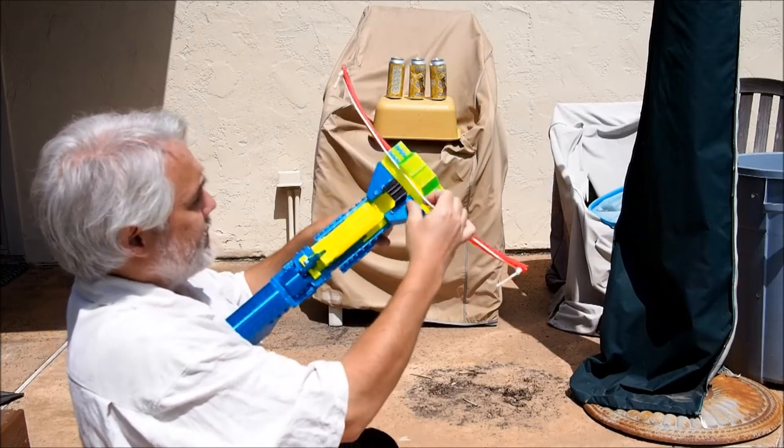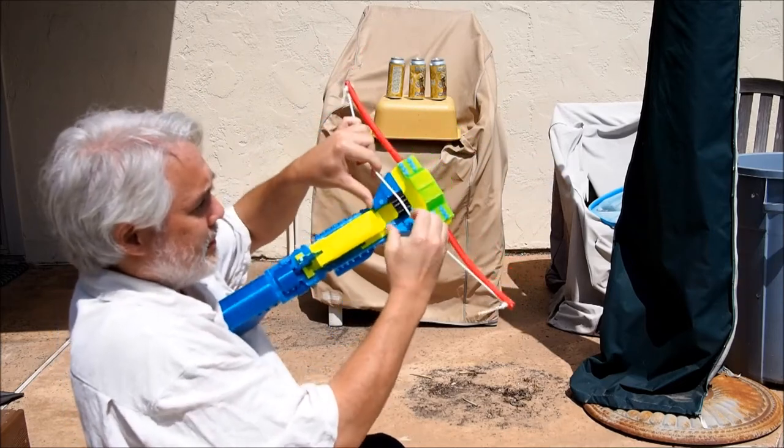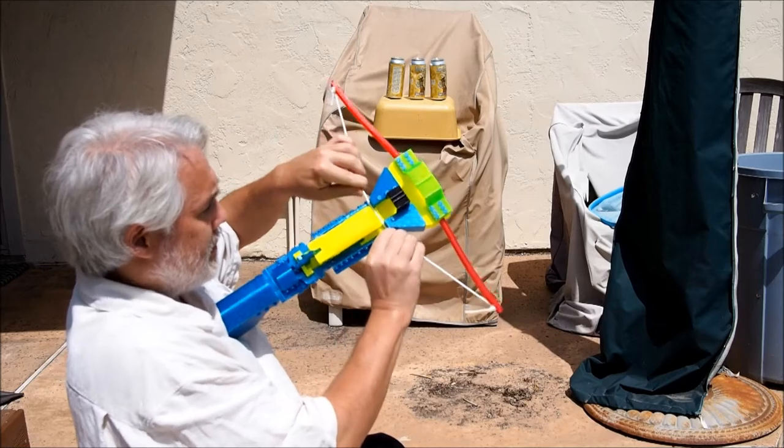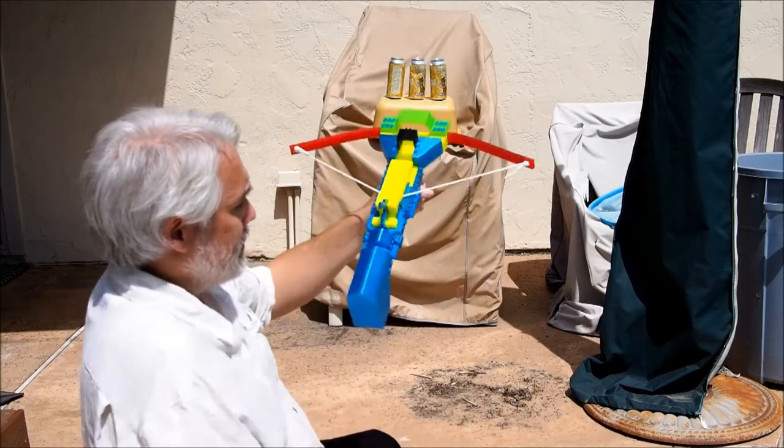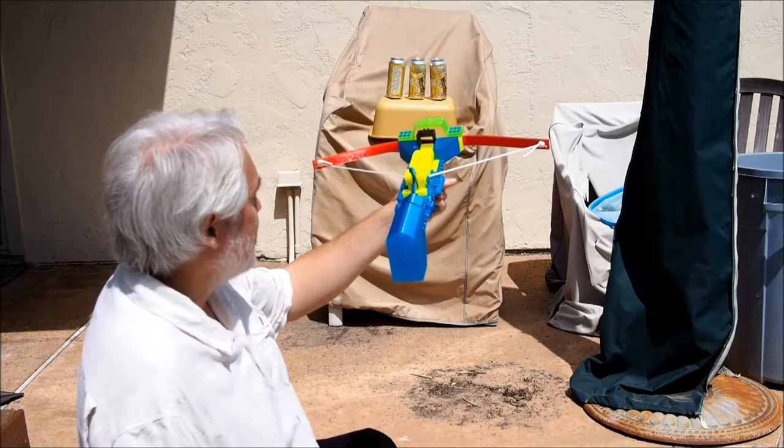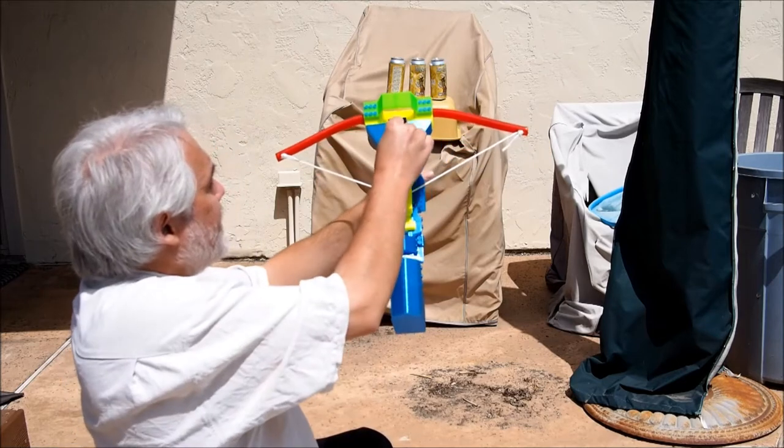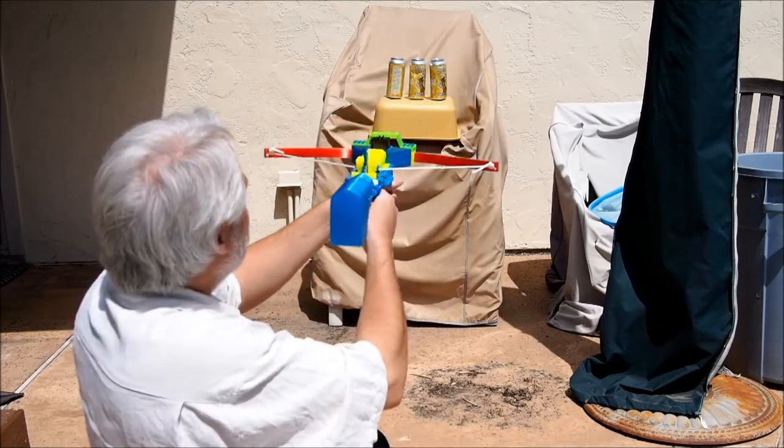And now we have two clips of the device in action so you can get an idea of the relative rate of fire and usage. This first one is shooting at some cans and the next one is shooting at some 3D printed iron castle and knight pieces.